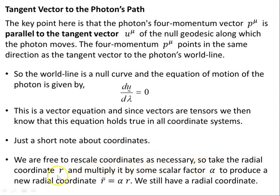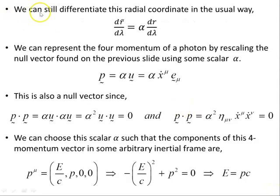Just a short note about coordinates. We are free to rescale coordinates as necessary. So take the radial coordinate R and multiply it by some scalar factor alpha to produce a new radial coordinate R bar, alpha times R. We still have a radial coordinate. We can still differentiate this radial coordinate in the usual way, so dr bar d lambda is alpha times dr d lambda. We can represent the four momentum of photon by rescaling the null vector found in the previous slide, what we took to be the four velocity.